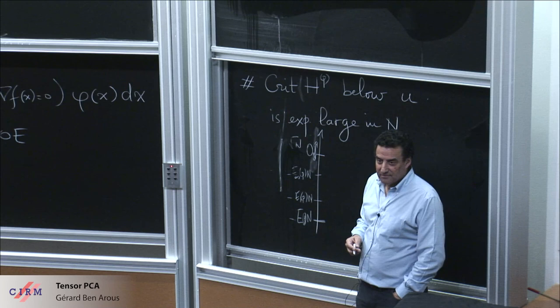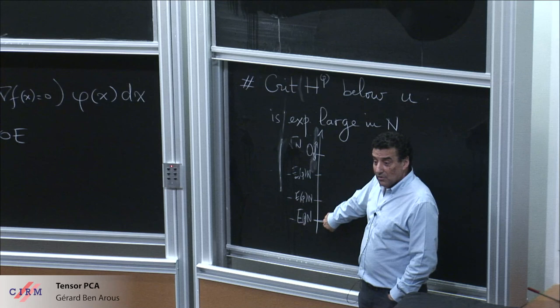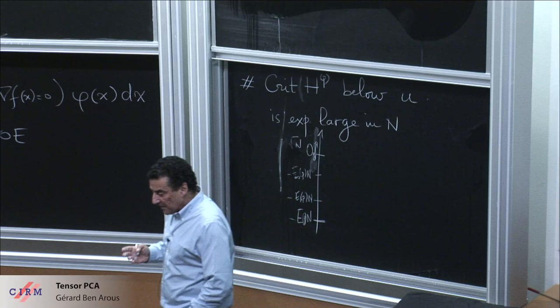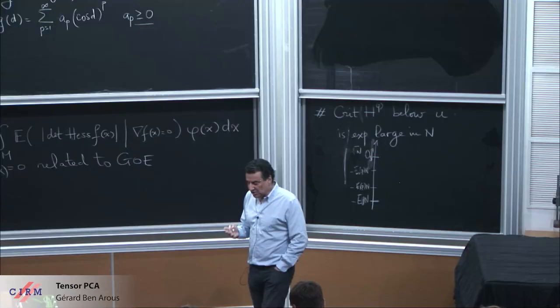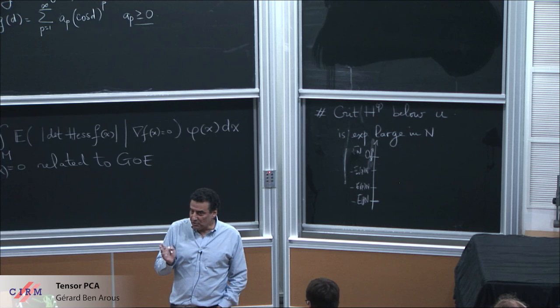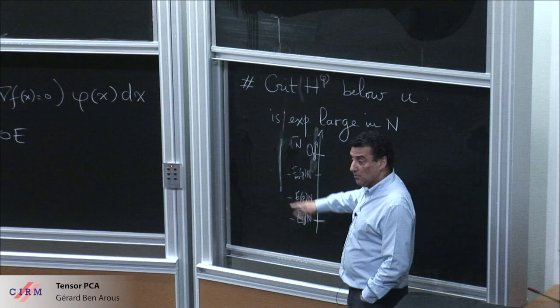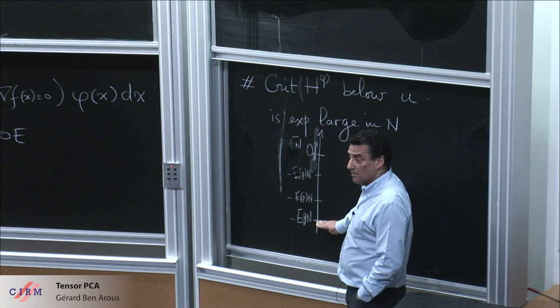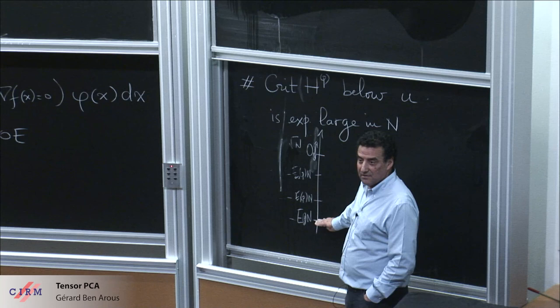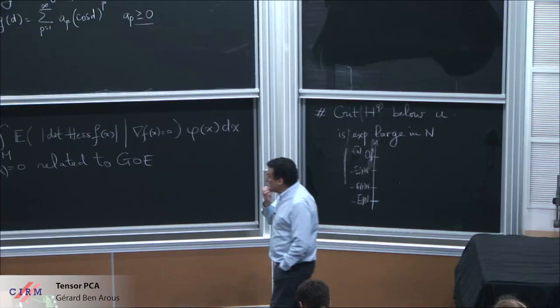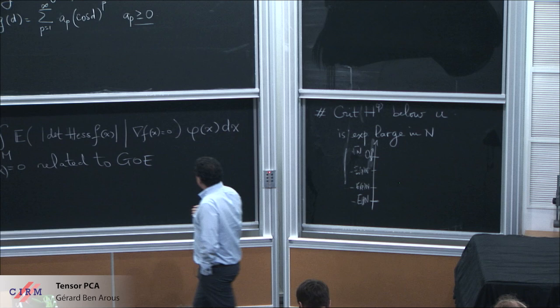The injective norm is at E_0. The value E_0 is in fact the ground state of the spin glass — you can prove that. The anneal computation is done in work with Antonio Auffinger and Jiri Cerny. The fluctuations are done by Eliran Subag, and then Subag, Zeitouni, and myself. All that is understood, done in the last eight or nine years. The injective norm of a random Gaussian tensor is this value E_0(P) — forget the N, which is just normalization.